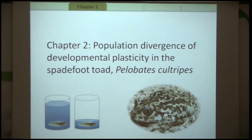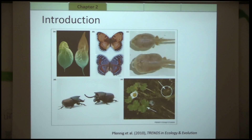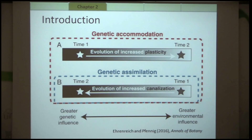Moving on to my second chapter, which is on the population divergence of developmental plasticity in the spadefoot toad Pellobates cultripes. Phenotypic plasticity is the ability of an organism to give rise to various types of morphology, physiology, or behaviour in response to variation in the environment — such as the presence of predators, diet, or annual rainfall. It is the ability of a gene to respond to the environment and give rise to various phenotypes, and given sufficient environmental variability, plasticity can either decrease or increase.